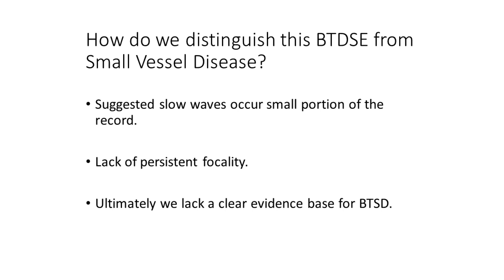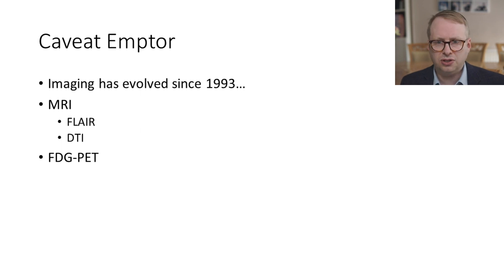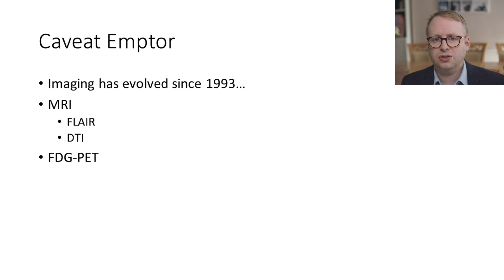How do we distinguish these phenomena that we see in older people from small vessel disease? It's suggested that the slow waves are occurring in a very small proportion of the record, and there's a lack of persistent focality. But I would put it to you that ultimately we are lacking a clear evidence base for this. I would move away from considering something as necessarily labeled as normal, to something which is seen at that age, because imaging has really evolved since CT scans of 1990. We now have MRI in common use with various sequences to better look at cerebrovascular structure, and FDG PET as well. Our understanding of what happens to the brain in terms of its circulation, particularly its microvasculature, has come a long way. So although we may well see these things in older people, I would personally be quite cautious to label them as being normal.